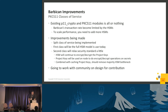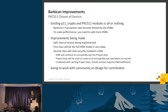The next improvement is implementing classes of service in the PKCS11 module. The existing module is all-or-nothing: either you do everything through the HSM or you don't use them at all. This becomes a bottleneck at high transaction rates. Based on previous conversations, the current module does not scale very well. To scale in the current model, you need to throw money at the problem and buy lots of HSMs — which these companies would love, since HSMs tend to be expensive.